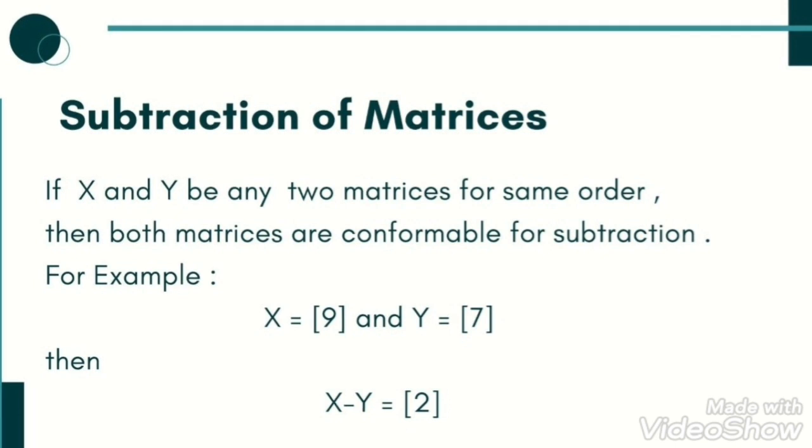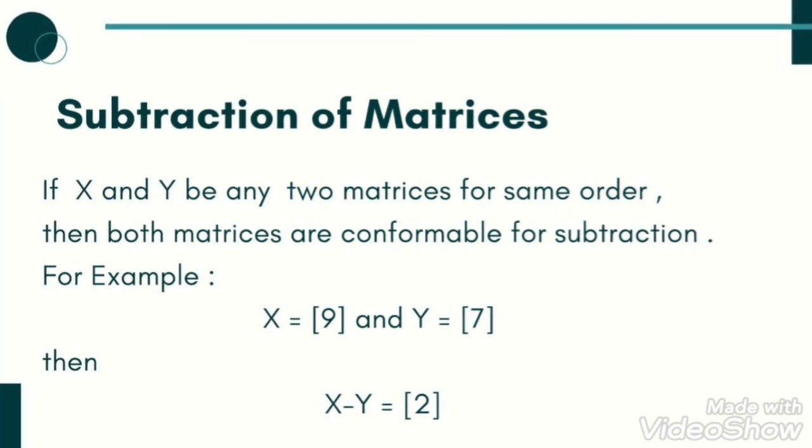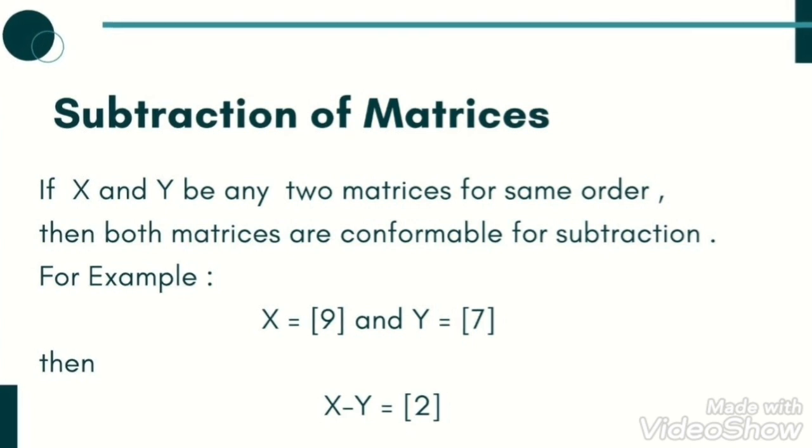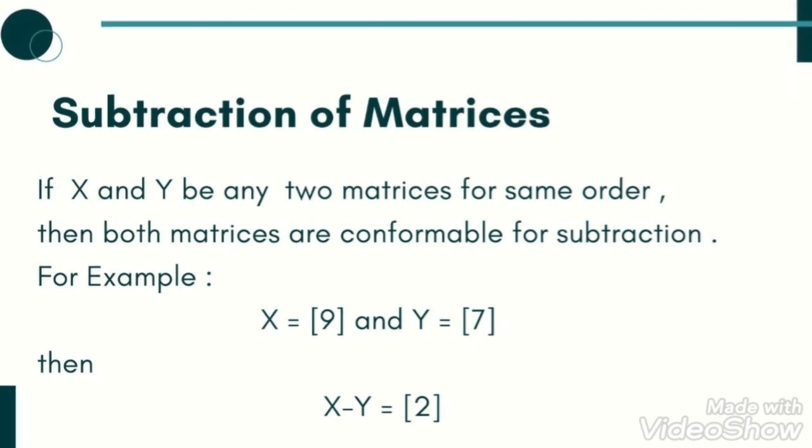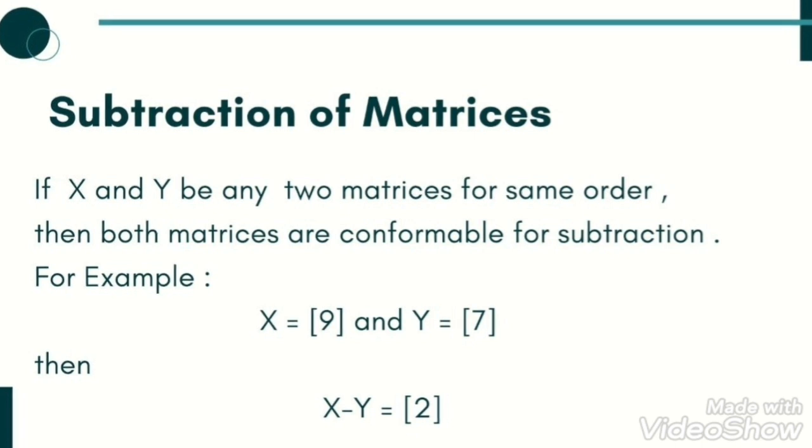Subtraction of matrices: Consider two matrices X and Y. First check the order of matrix X. One row and one column, so order of X is 1 by 1. Similarly, check the order of Y - one row and one column, so order of matrix Y is 1 by 1. Both matrices have the same order, which means both matrices are conformable for subtraction.